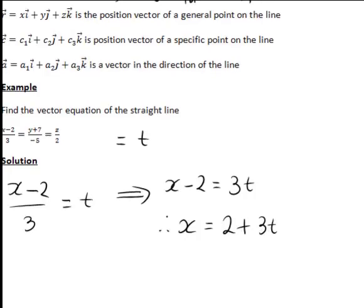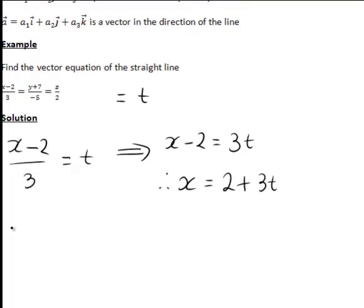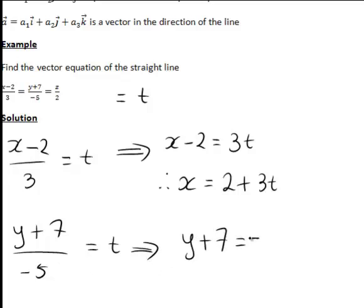Looking at the next of our Cartesian equations here, y plus 7 divided by negative 5. Setting that equal to t, multiplying both sides by negative 5 gives y plus 7 equal to negative 5t. The aim here is to make y the subject. So subtracting 7 from both sides, y equals negative 7 minus 5t.